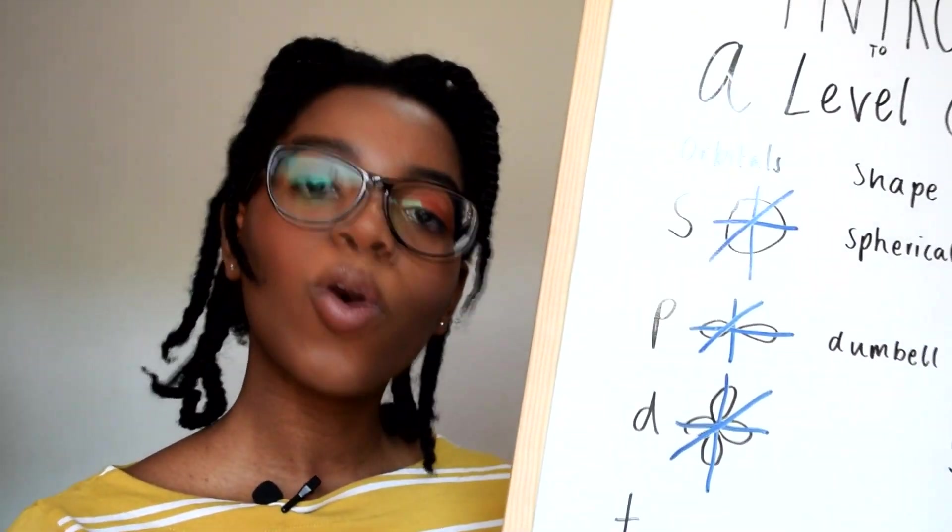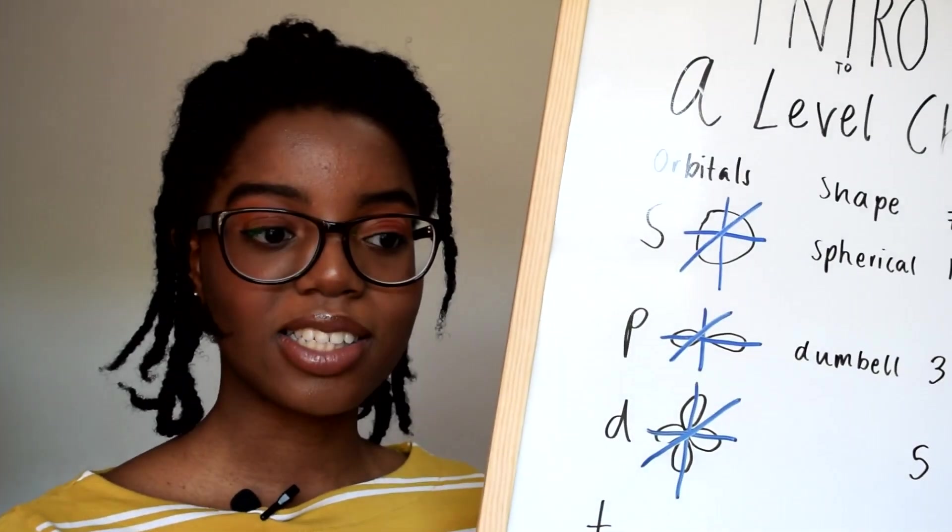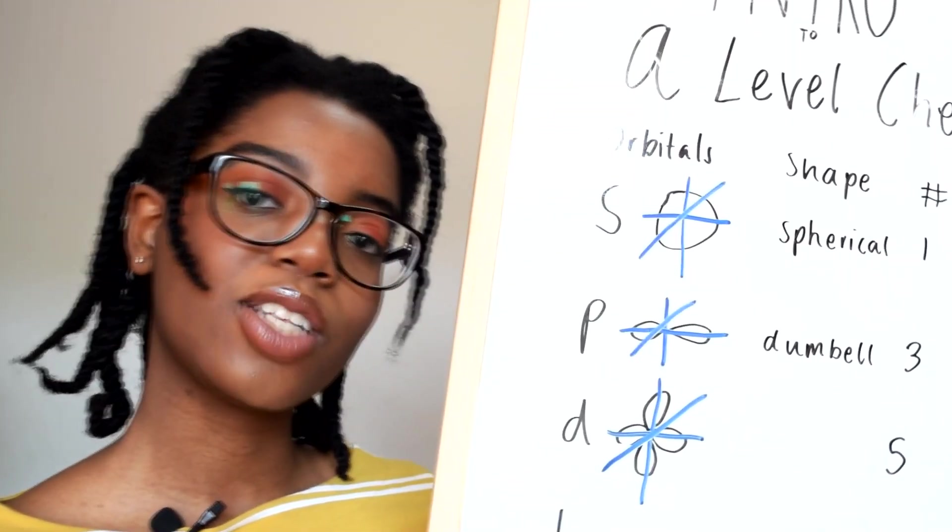Electron shells are made up of atomic orbitals. Think of an orbital more like the region of space where the electron may be. There's four main types of orbitals: S is sharp, P is principle, D is diffuse, and F is fundamental.